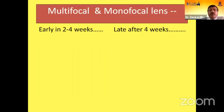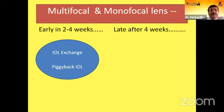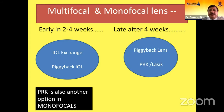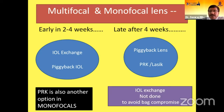In multifocal and monofocal lenses, if the refractive surprise presents within 2 to 4 weeks, go for IOL exchange. Piggyback IOL and PRK are also options in monofocals. If it comes late, go for piggyback lens, PRK, or LASIK. IOL exchange is not done late to avoid back-compromise.